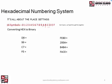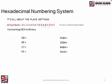F in binary is 1111. E is 14, which is 1110. So FE in hex is 11111110 in binary. Now let's do FE80: F is 1111, E is 1110, 8 is 1000, and 0 is 0000. So FE80 hex converts to 1111111010000000 in binary. That's 16 binary characters represented by just 4 hex characters — that's why we like hex so much.